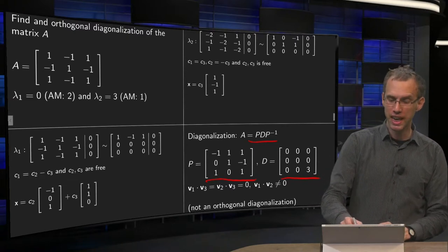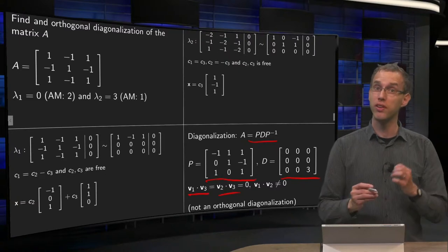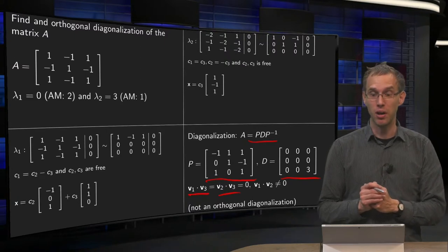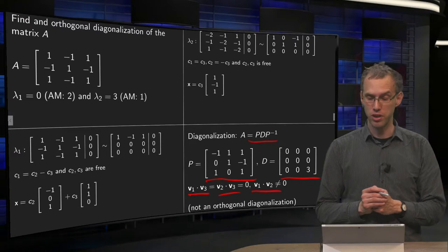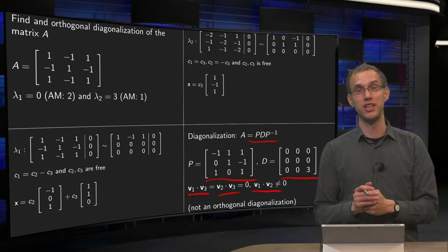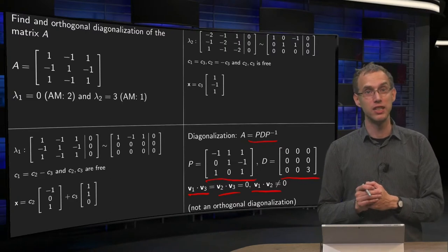If we compute the inner product with v1 and v3 and v2 and v3, you observe that this inner product equals zero. However, the inner product between v1 and v2 is not equal to zero, so this is the diagonalization of A, but not an orthogonal one, even though our matrix A is symmetric.